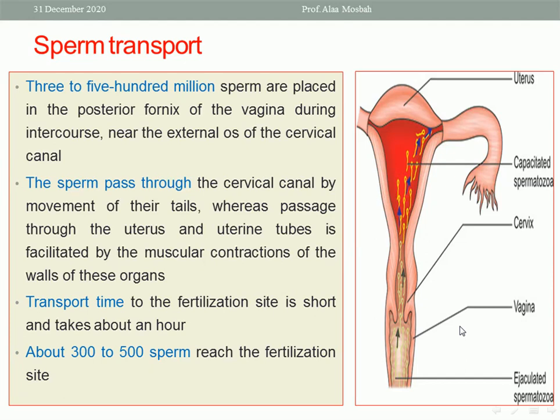These sperms pass through the cervical canal, through the cervical mucus, which is cloudy at the time of ovulation under the effect of high estrogen. These millions of sperms pass through the cervix to the uterine cavity and to the right and left tubes, to meet the ovum which passes through the fimbrial end into the fallopian tube. Most fertilization occurs at the ampullary portion.